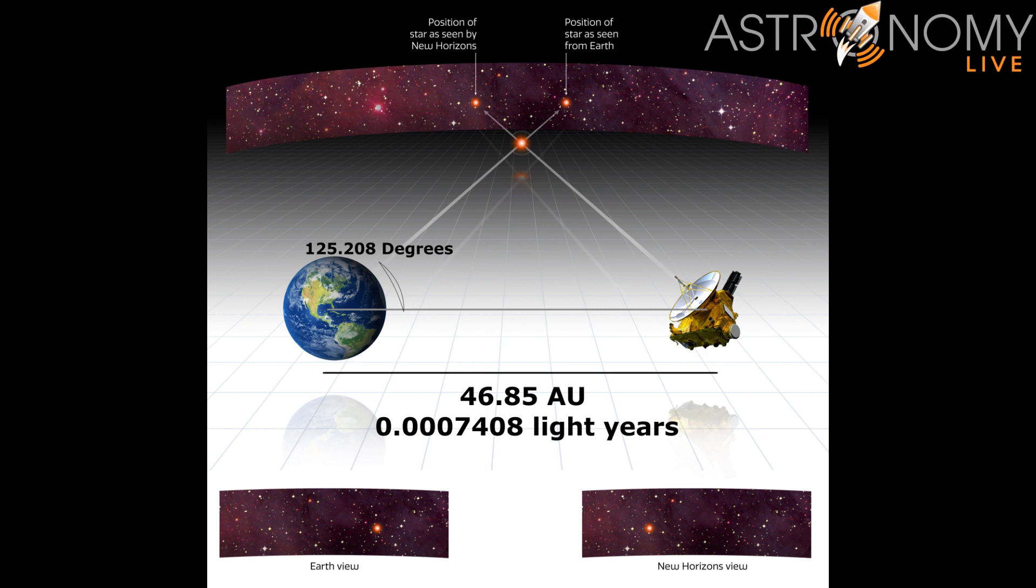Next we need to know the angle between Wolf 359 and the New Horizons probe as seen from Earth. That angle was 125.208 degrees at the time of the measurement. We know from the astrometry measurements seen earlier that the parallax angle was 0.00447 degrees.